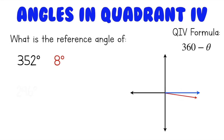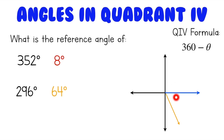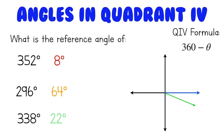What about a 296 degree angle? We'll do 360 degrees minus 296 degrees, which gives us a 64 degree angle. And what about 338 degrees? 360 degrees minus 338 degrees gives us an angle of 22 degrees.